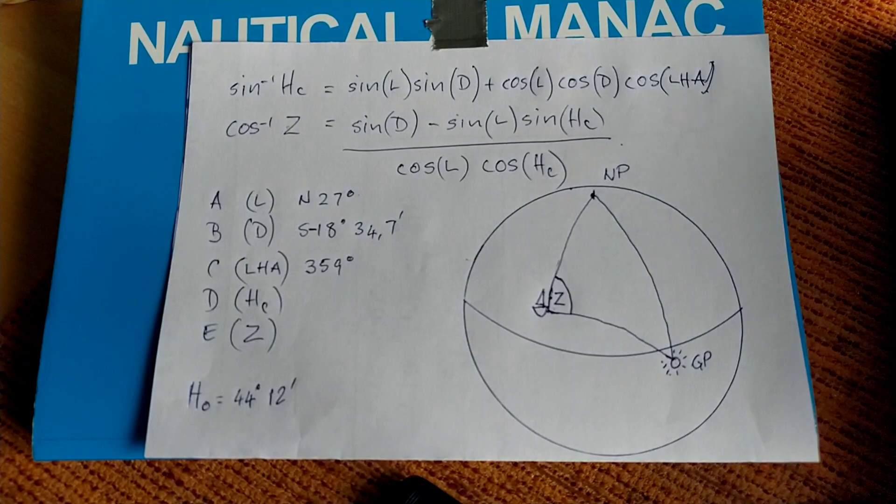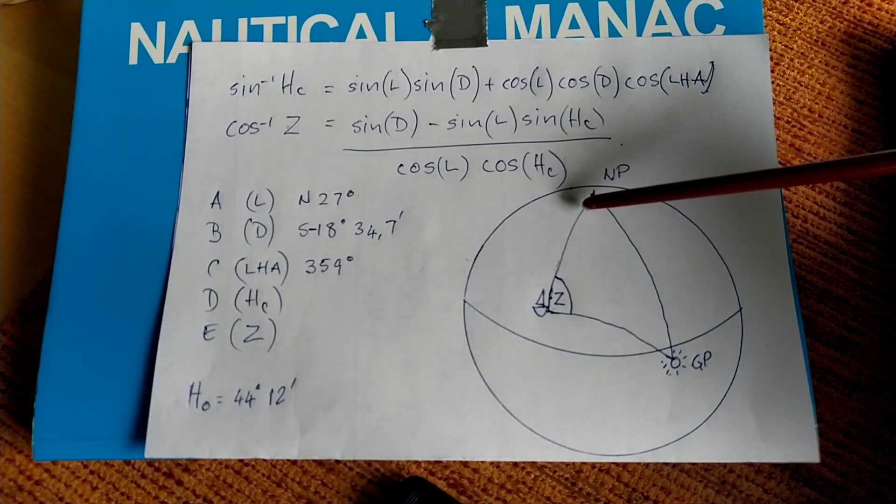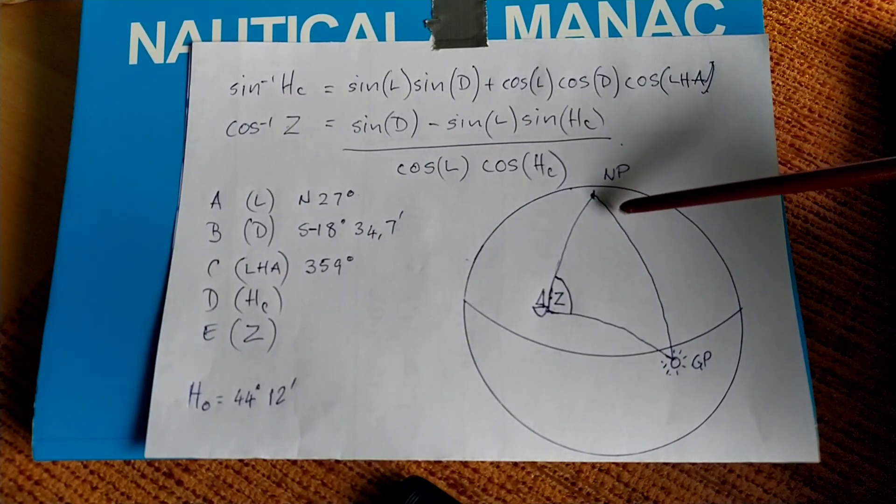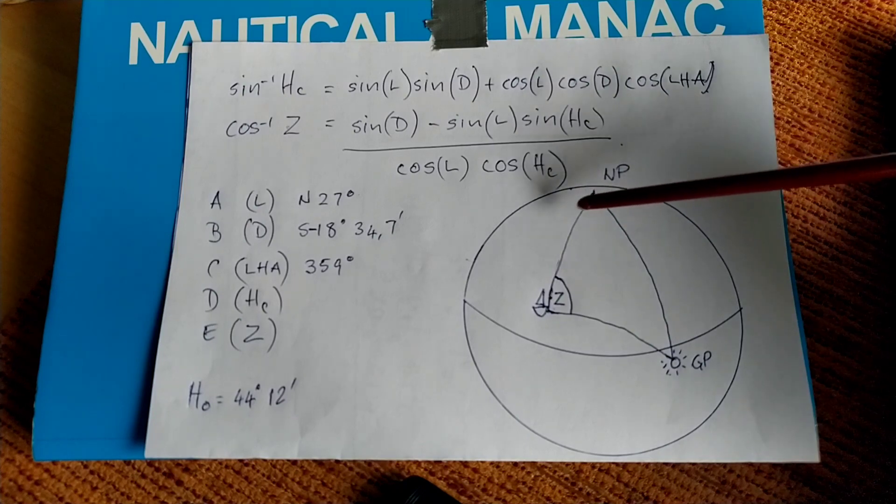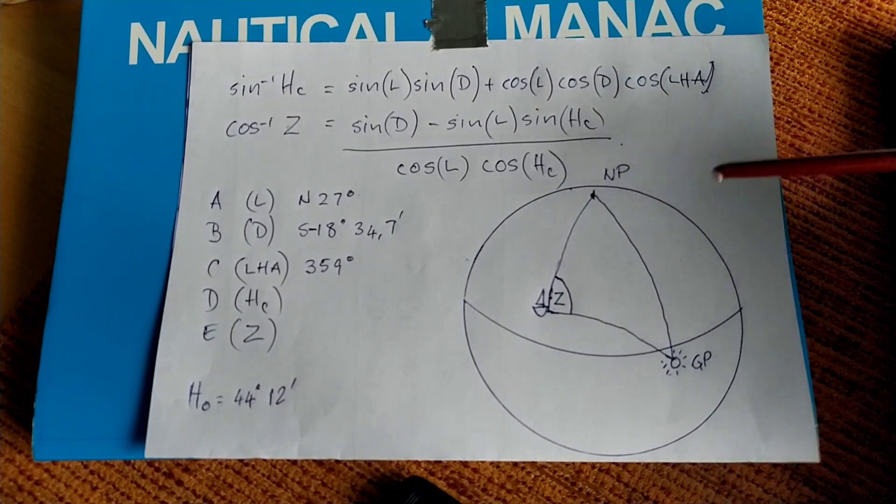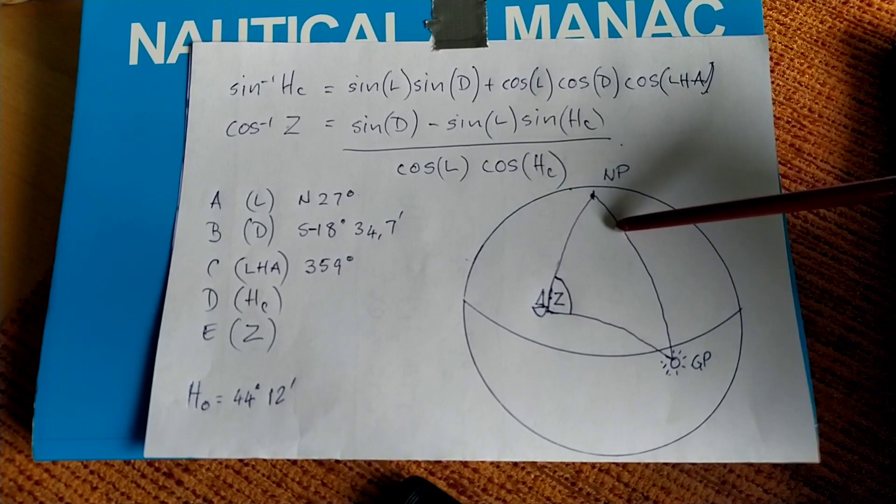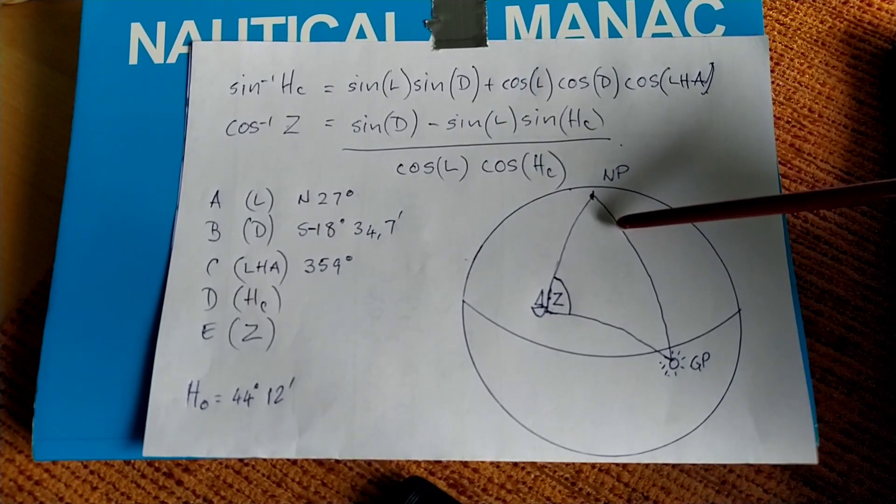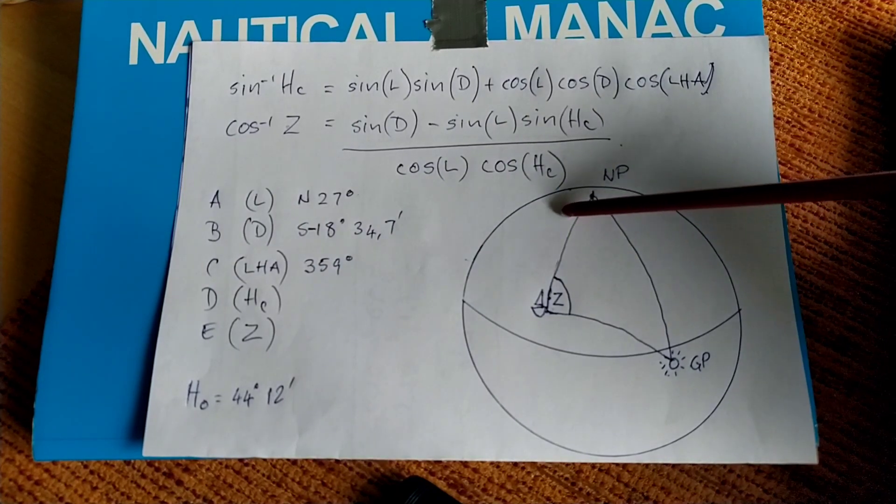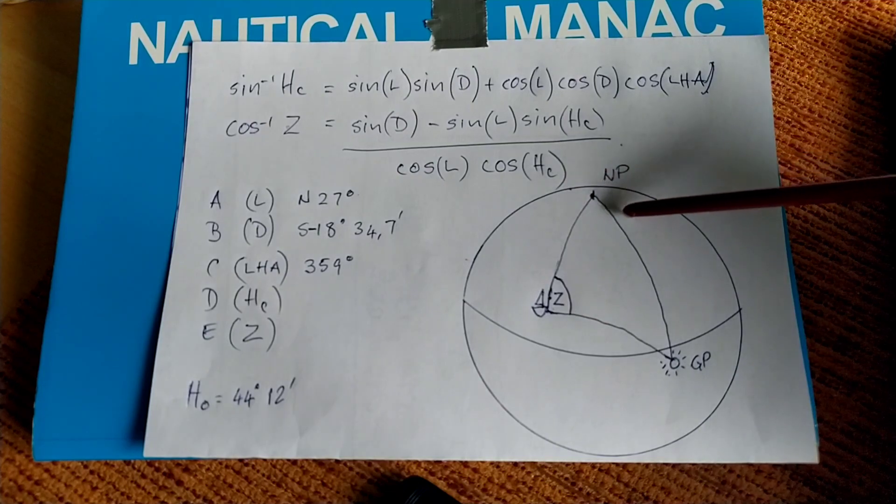The LHA is always measured from the observer westward to the GP, always. It's only ever westward and only ever from the observer to the GP. It's never eastward from the observer to the GP. It's never westward from the GP to the observer. Only ever westward and only ever from the observer to the GP.